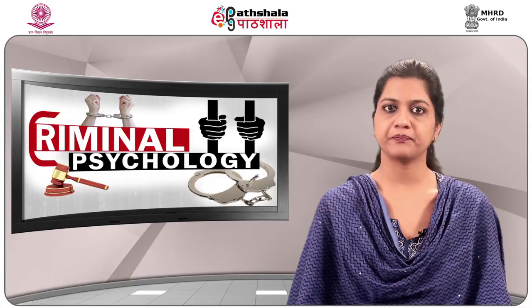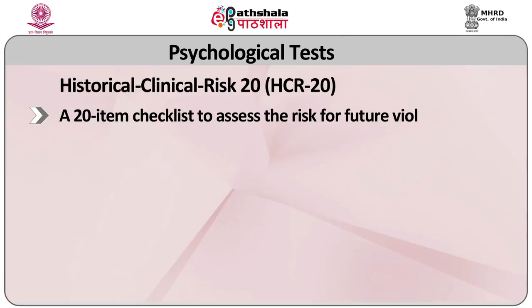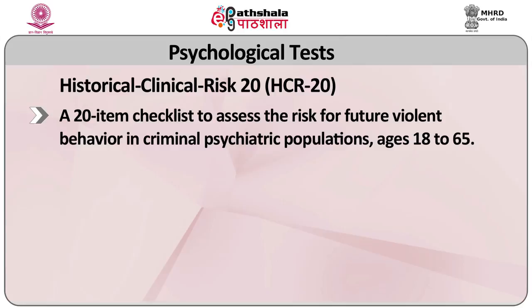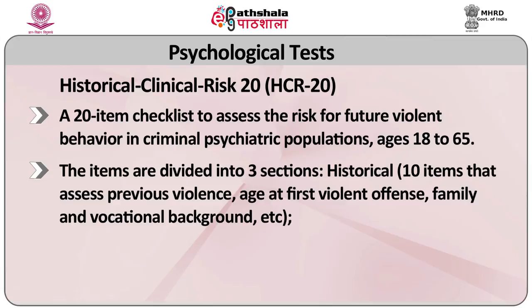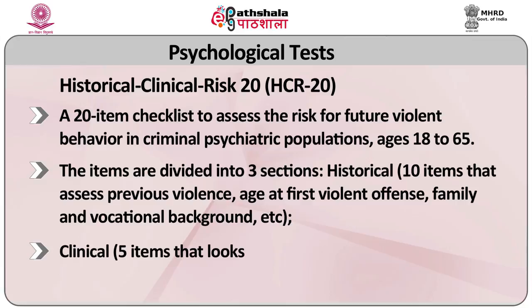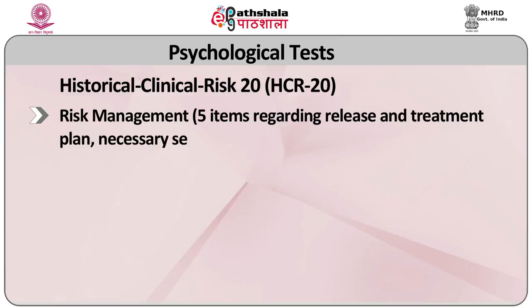HCR-20: Historical Clinical Risk — 20 is a 20-item checklist to assess the risk for future violent behavior in criminal psychiatric populations ages 18 to 65. The items are divided into 3 sections: Historical — 10 items that assess previous violence, age at first violent offence, family and vocational background; Clinical — 5 items that look at current symptoms and psychological adjustments; and Risk Management — 5 items regarding release and treatment plan, necessary services and support.